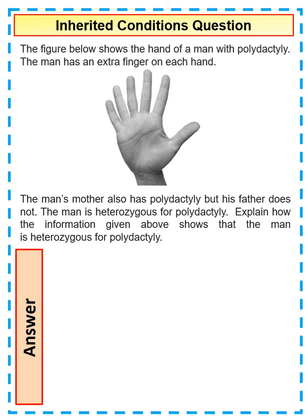The man's mother also had polydactyly, but his father does not. The man is heterozygous — remember, heterozygous means he has one of both alleles, so dominant and recessive. The question asks: explain how the information given above shows that the man is heterozygous for polydactyly.